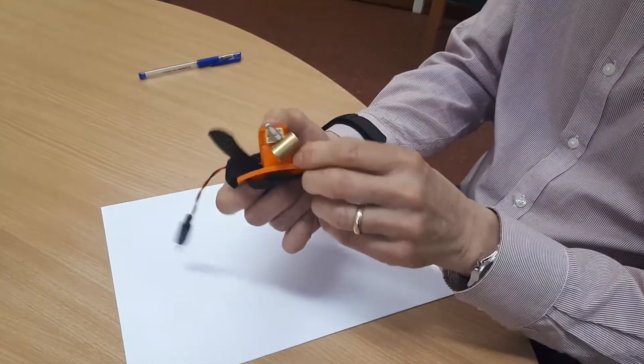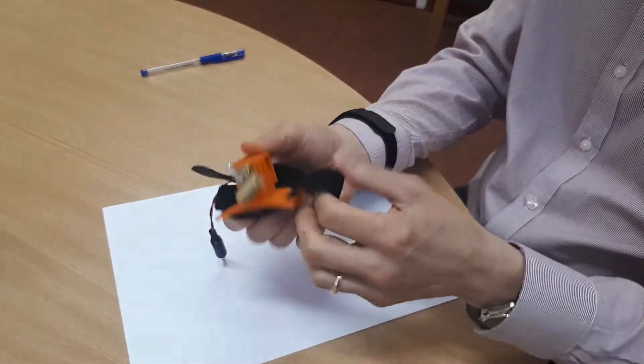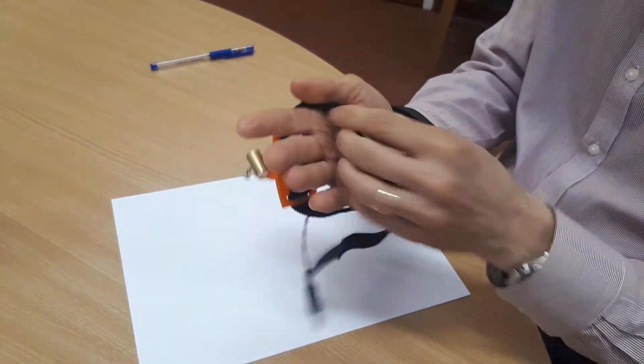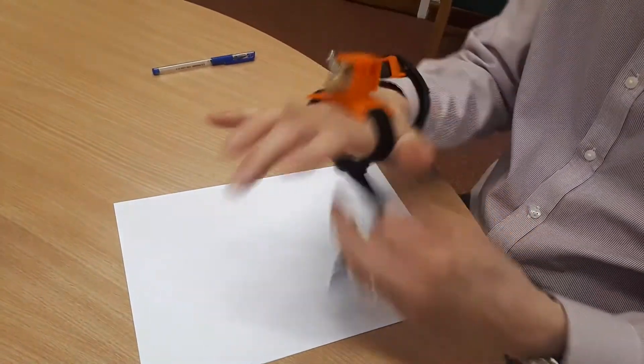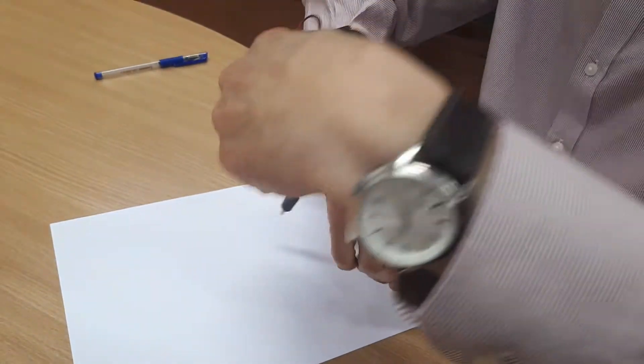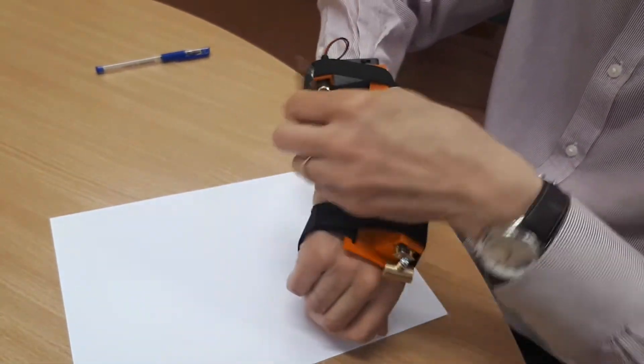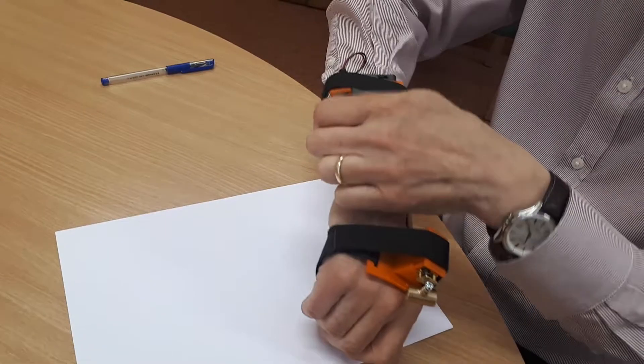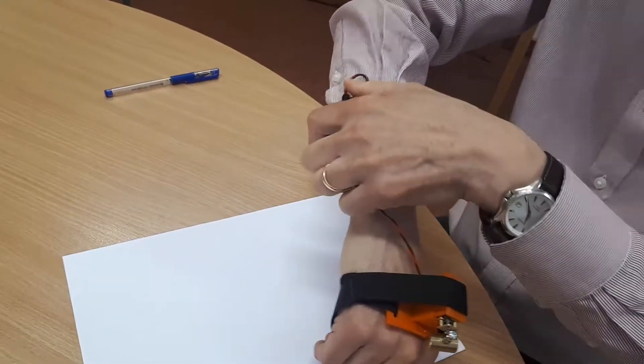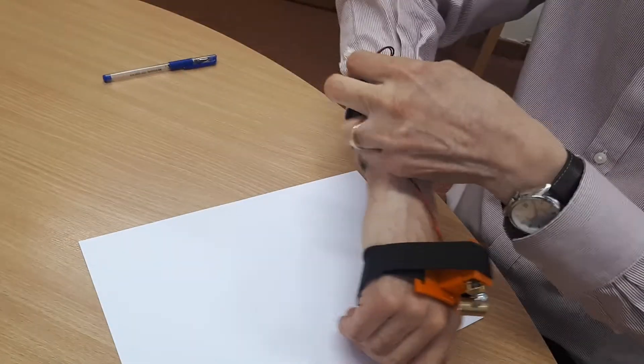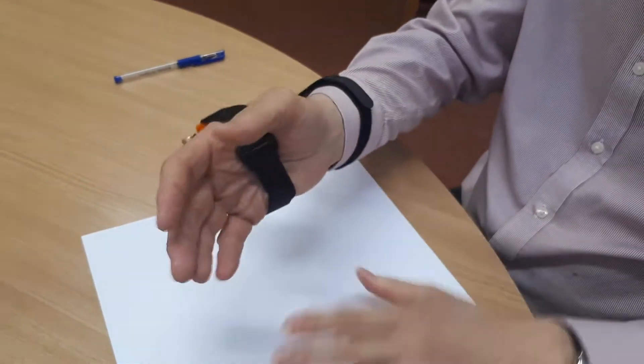Then the actual device itself, which is just a little motor with a weight on it, nothing too elaborate, can be strapped onto the palm of the hand like so. Then we just connect up to the battery box so we've got the power in there and it's all ready to go.